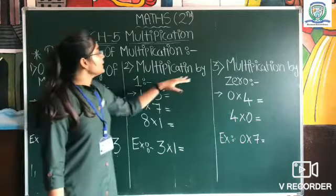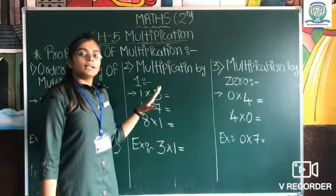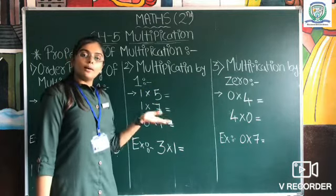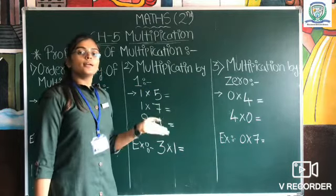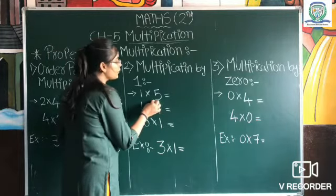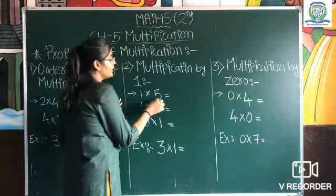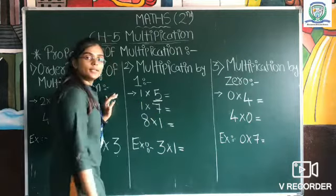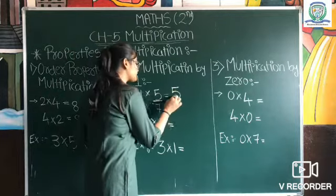The second property is multiplication by one. When any number is multiplied by one, the answer is the number itself. For example, one into five—when we multiply five by one, the answer is the number itself, which means 5.